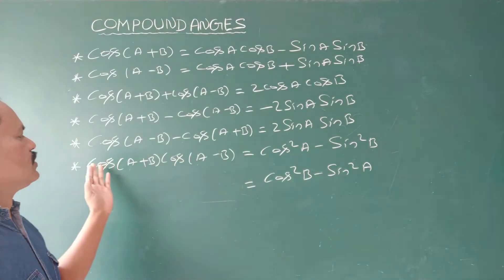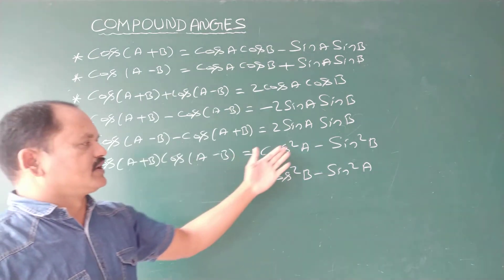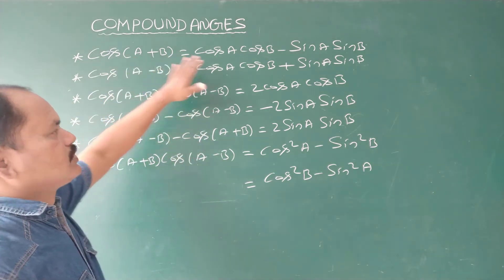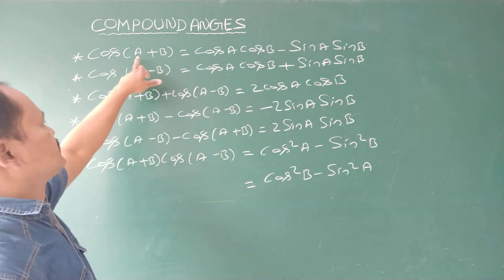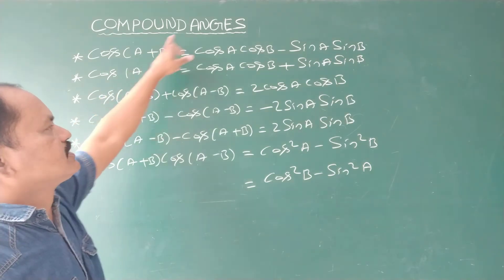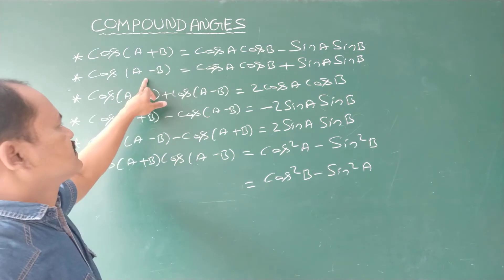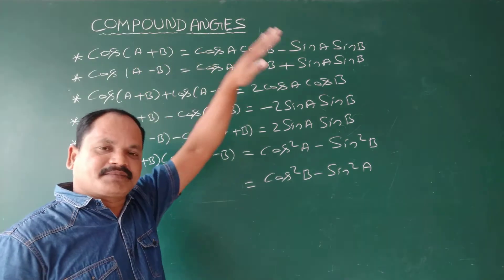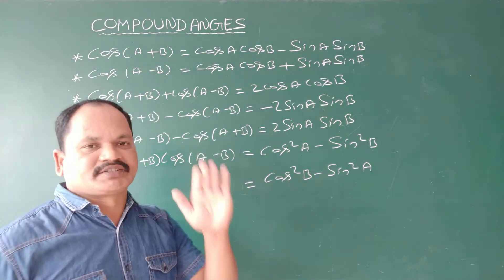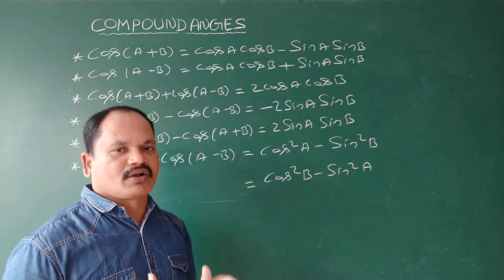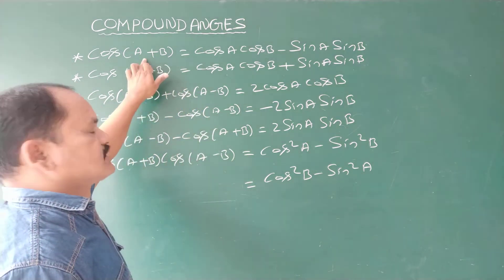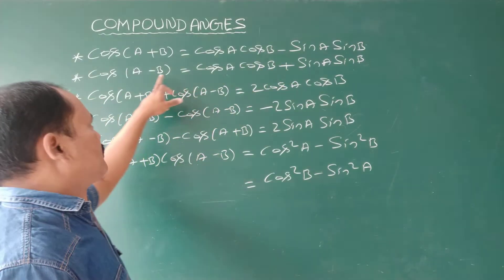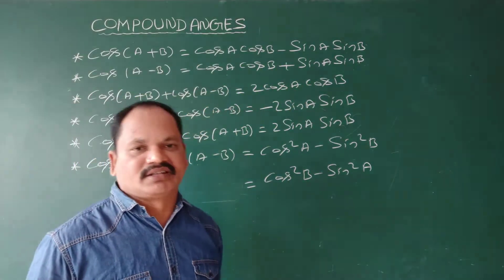Product of these two: cos A plus B into cos A minus B is cos squared A minus sin squared B, or cos squared B minus sin squared A. Observe and easily remember: for cosine, in compound angle A plus B it is plus, but in the expansion it is minus; for compound angle A minus B it is minus, but in the expansion it is plus. For sine it is straightforward — plus gives plus and minus gives minus — but cosine has a sign change.